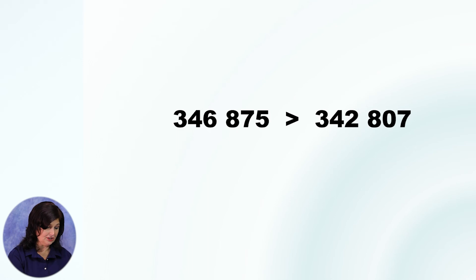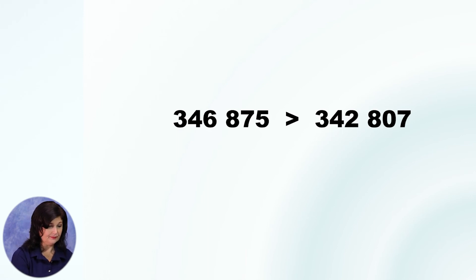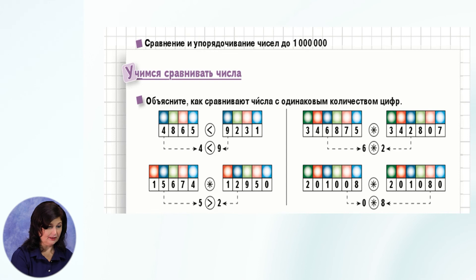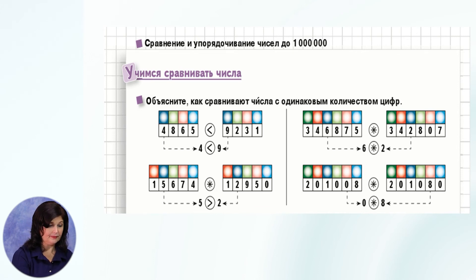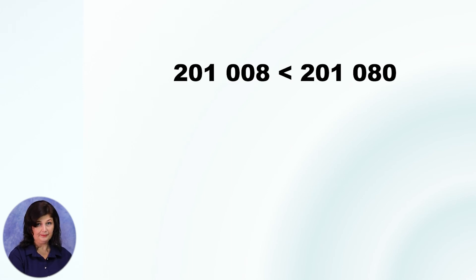Рассмотрите следующие числа и попробуйте сравнить числа самостоятельно. Вспомните ход рассуждений. Сравниваем числа по разрядам: 2 011 008 и 2 011 080. Сверьте свой ответ: 2 011 008 меньше, чем 2 011 080. А почему? Правильно — потому что цифра десятков меньше у первого числа. Сравнили 0 и 8, значит и всё число меньше.